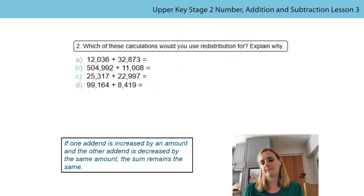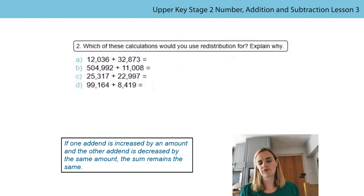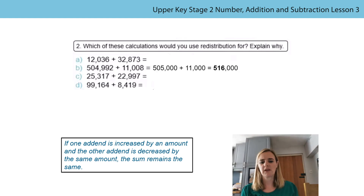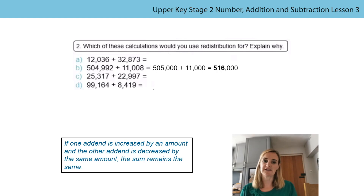Let's take a look at part B: 504,992 add 11,008. Take a close look - I noticed that 504,992 is actually really close to 505,000. In fact I only have to increase it by 8, and decrease 11,008 by 8, and then you can see I've got a really easy calculation. 505,000 add 11,000 is 516,000. That one's a really good one to redistribute.